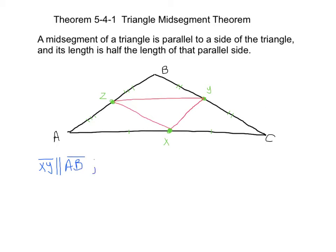In addition to this, we can also say one more thing about XY. We can say the length of XY, notice there's no bar above XY. The length of XY is equal to, well let's see, its length is half the length of that parallel side. So the length of XY is one-half the length of AB.